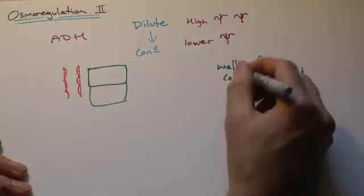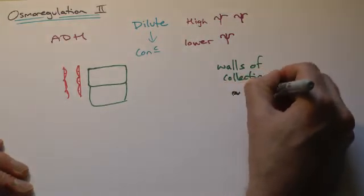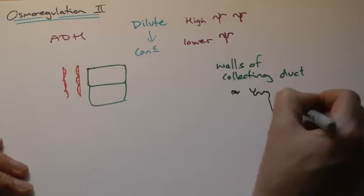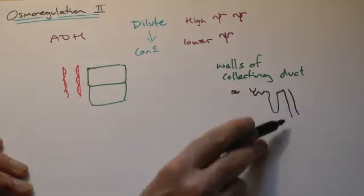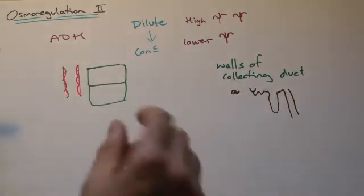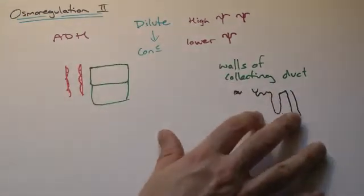Remember this is, here's my nephron, loop of Henle, goes into the collecting duct. The walls of the collecting duct are these bits. It's like saying the wall of an artery. You don't think the cells that make it up are the walls, but you're just calling it the walls. So do be careful here.